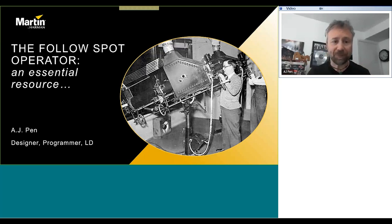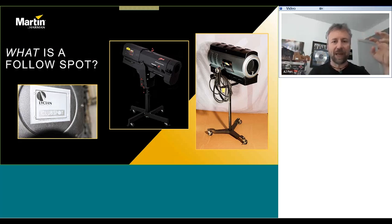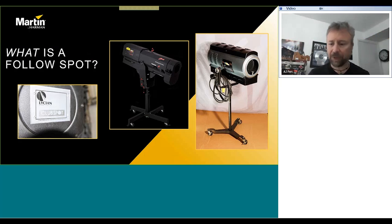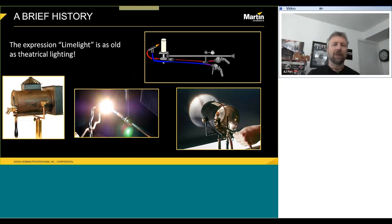What is a follow spot? At its simplest, it's a light that follows somebody — a big tin can with a bright light source at one end, a few lenses to direct the beam, and mechanical systems to shape the beam, change intensity, and change color. We use 'spotlight' both as a noun and a verb. The expression 'limelight' — meaning someone has attention on them — comes from the first type of follow spot, and it's also a great Rush song.